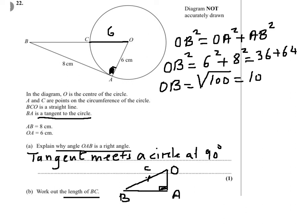This will give us BC equals BO take away CO, so it's 10 take away 6, which is 4 cm.